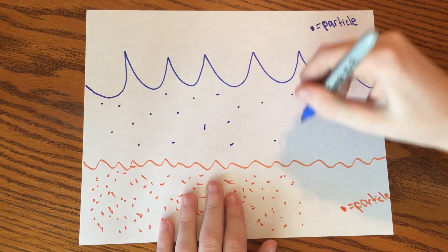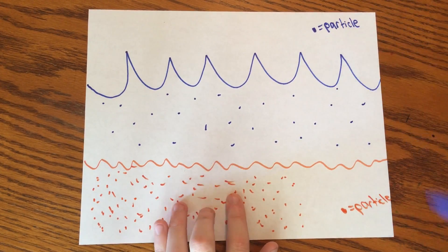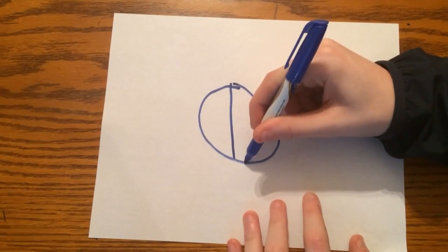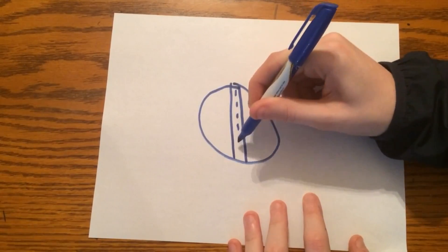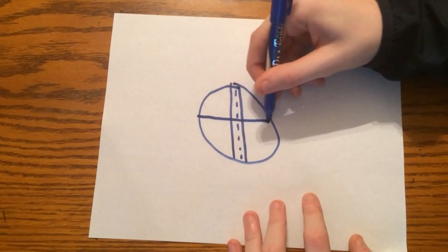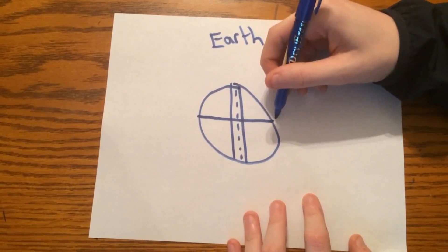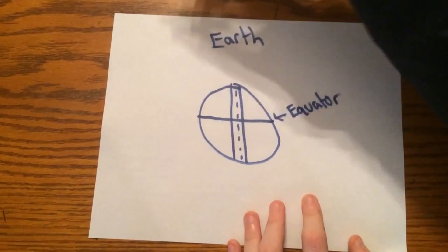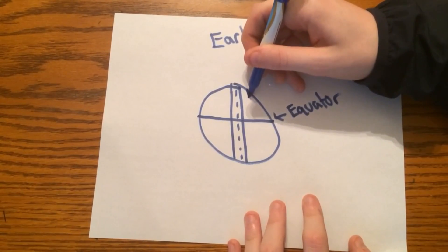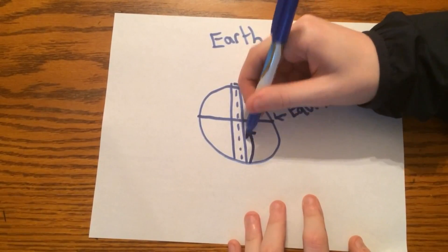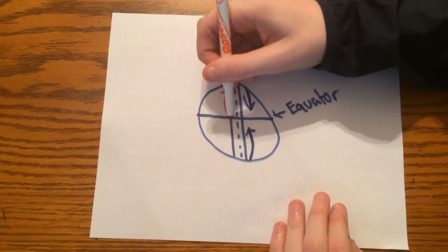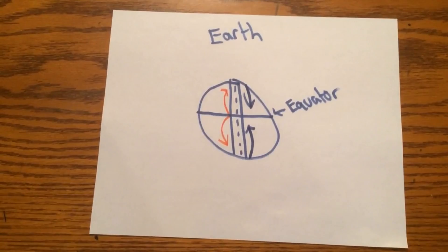The global conveyor belt uses these two types of currents to move water across the globe in a 1,000-year cycle. As a result, there are two processes that go on simultaneously: warm surface currents carry less dense water away from the equator toward the poles, and cold ocean currents carry deep, denser water away from the poles toward the equator.